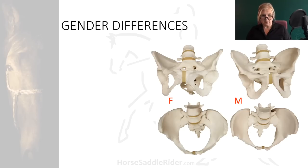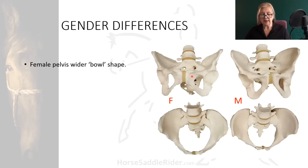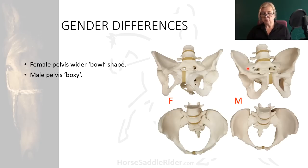There are gender differences in the human pelvis and this can affect saddle fit for the rider in terms of aiding or impeding their ridden alignment as well as comfort in the saddle. The female pelvis is a wider, bowl-shaped structure compared with that of the male, which is more boxy and rectangular in profile.